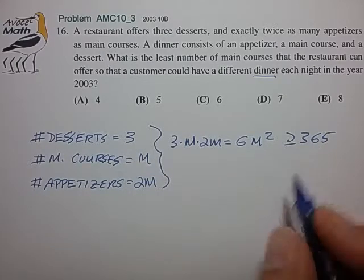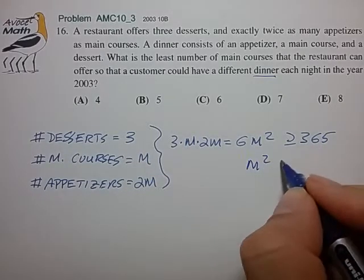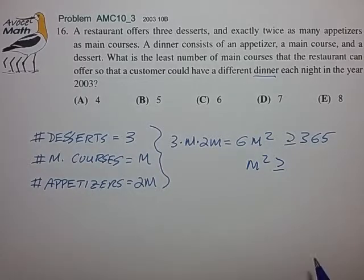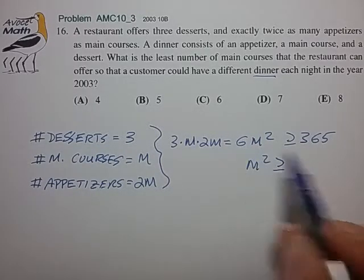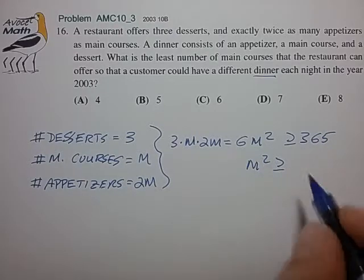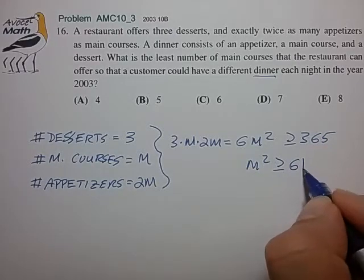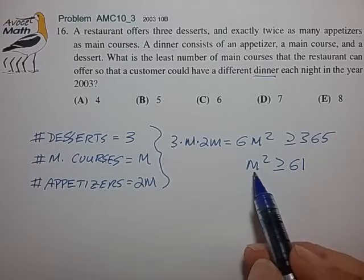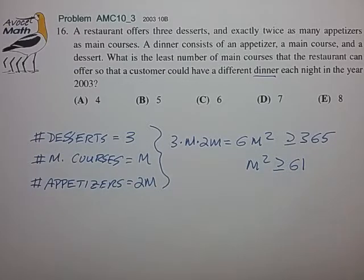And at this point we can just start doing a little bit of algebra. Let's divide both sides by six. Well M squared is greater than or equal to 365 divided by six. Well let's just make it approximately 366 divided by six. That makes our math just a little bit easier. So we have the condition that M squared has to be greater than or equal to 61.